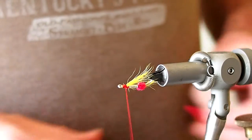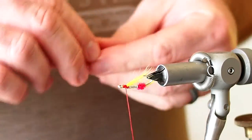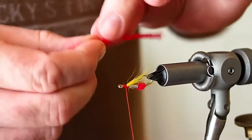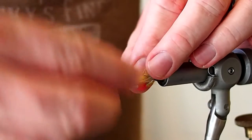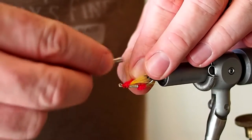This fly also calls for a collar, and we're going to tie that with red chenille as well. Again, good tight wraps here.